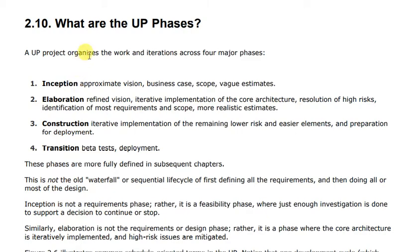What are UP phases? UP, the Unified Process, organizes the work and iterations across four major phases: namely Inception, Elaboration, Construction, and Transition.